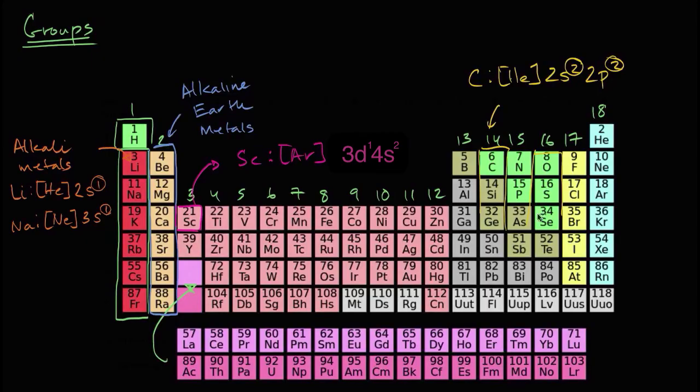You go to this yellow group right over here. These are the halogens. And these are highly reactive because they have 7 valence electrons. They would love nothing more than to get 1 more valence electron. So they love to react. In fact, they especially love to react with the alkali metals over here.